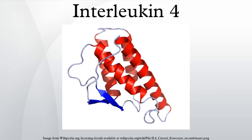This cytokine was co-discovered by Maureen Howard and William E. Paul, and by Dr. Ellen Vitekna and her research group in 1982. The nucleotide sequence for human IL-4 was isolated four years later, confirming its similarity to a mouse protein called B-cell stimulatory factor 1.